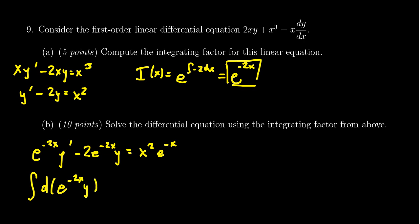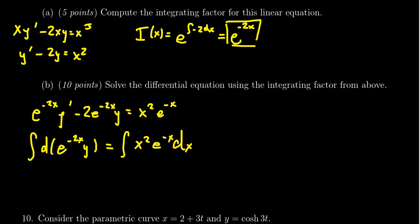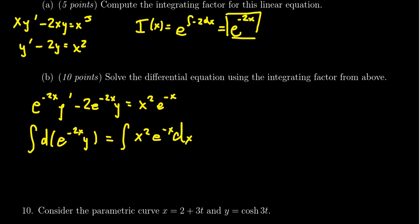I know the antiderivative on the left-hand side. The right-hand side is the interesting one: the integral of x squared e to the negative 2x dx. The left-hand side antiderivative is simply e to the negative 2x times y — no problem there.